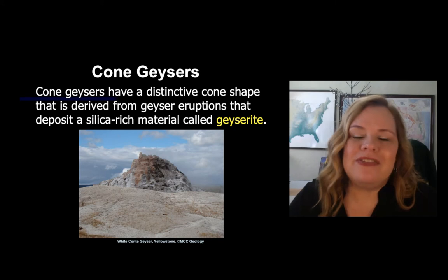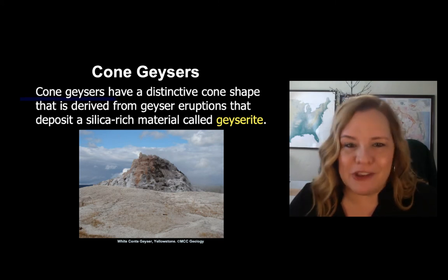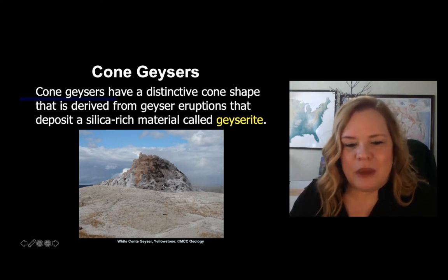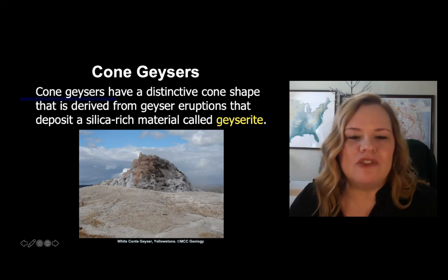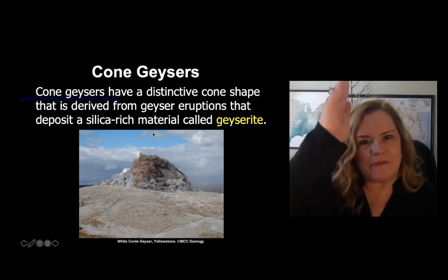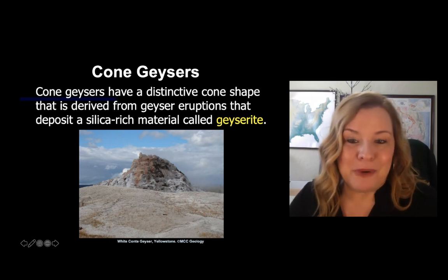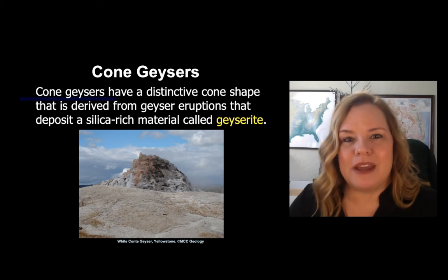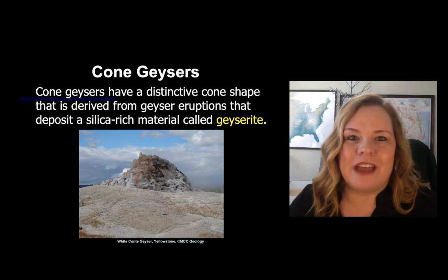Cone geysers have a distinctive cone shape that comes from geyserite. You're looking at White Cone Geyser here — a very large structure. When it erupts, water comes shooting straight up. That is one distinctive difference from a fountain slash pool geyser. In either case you get geyserite inside the plumbing, but in cone geysers you also get it at the surface.